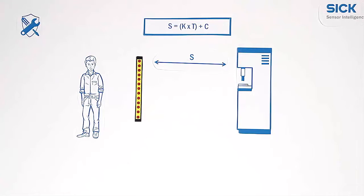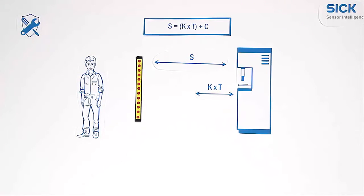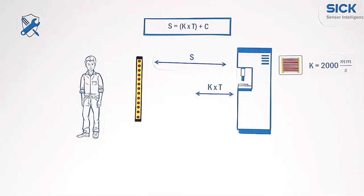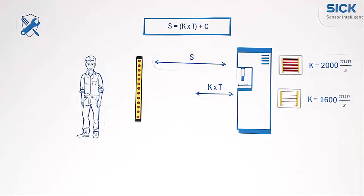The first part of it is the approach speed K multiplied by the stop time of the machine T. In case of light curtains, an approach speed of 2000 mm per second is mostly valid. In the multi-beam case, 1600 mm per second is the correct value.